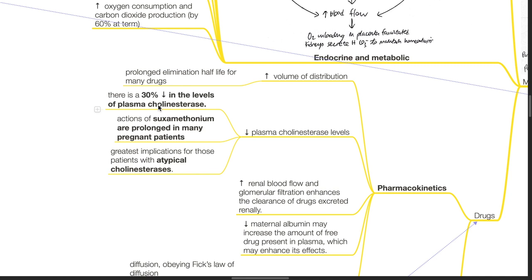There is a 30% decrease in plasma cholinesterase levels. Actions of suxamethonium are prolonged in many pregnant patients, with greatest implications for those with atypical cholinesterases.